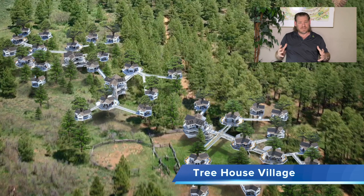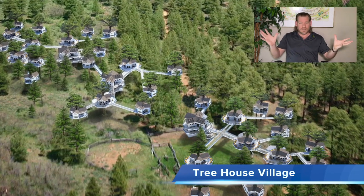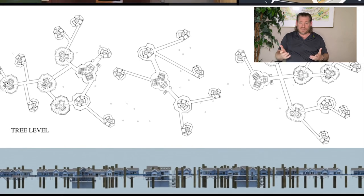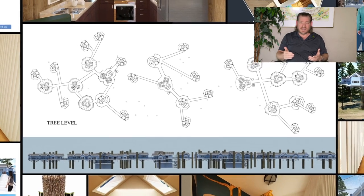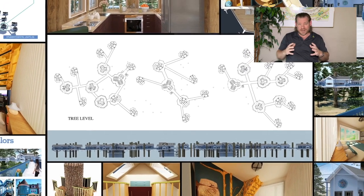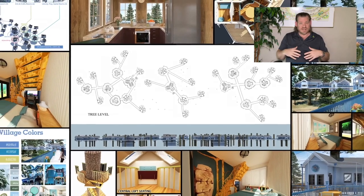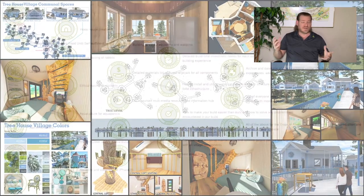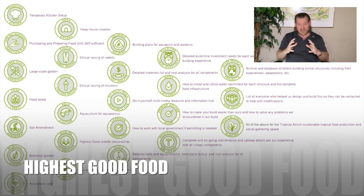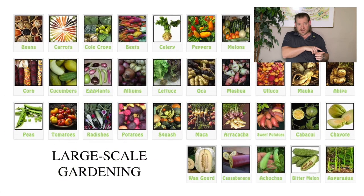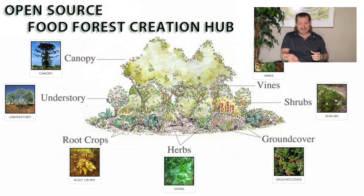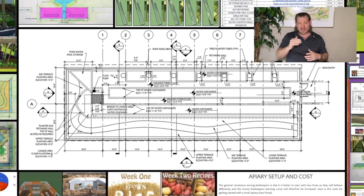Our idea is to take this physical foundation as well as this global collaborative network and leverage them both to create a world that works for everybody within one generation. A self-replicating model designed around teacher demonstration hubs — One Community being the first — that invites hundreds of thousands of people to visit annually, to see and experience what we're doing, and open-sourcing the complete living experience so it can be replicated as either the complete hub or as individual components.